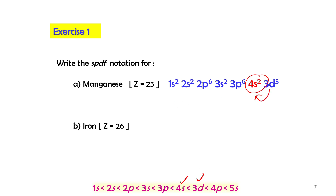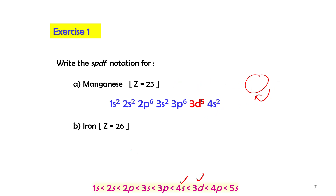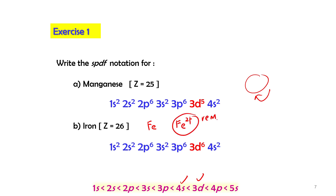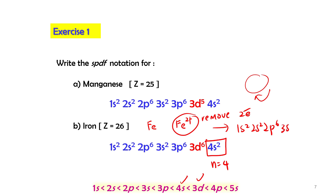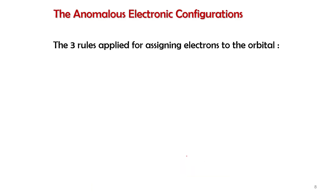Now we write the electronic configuration for iron ions. For Fe²⁺, the configuration is 1s² 2s² 2p⁶ 3s² 3p⁶ 3d⁶ — we remove 2 electrons from 4s. For Fe³⁺, we remove 3 electrons: 2 from 4s and 1 from 3d, giving 1s² 2s² 2p⁶ 3s² 3p⁶ 3d⁵.